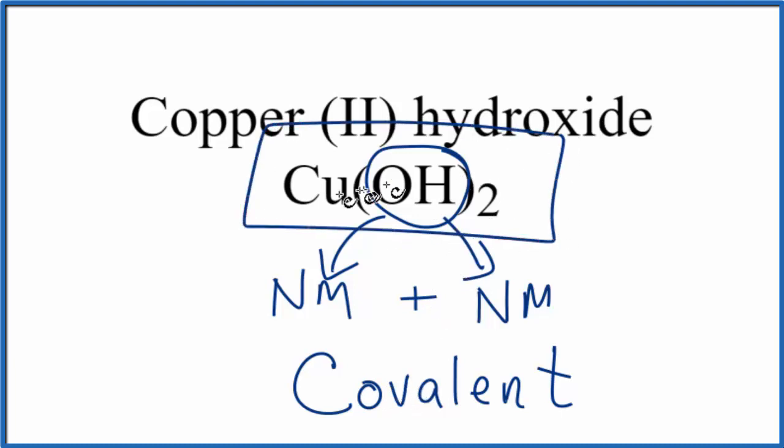But overall, because we have the positive copper 2 ion and the negative hydroxide ions, this will be an ionic compound. This is Dr. B, and thanks for watching.